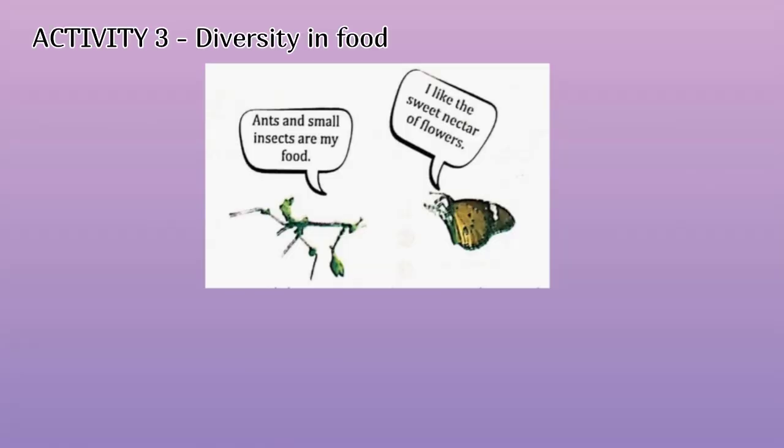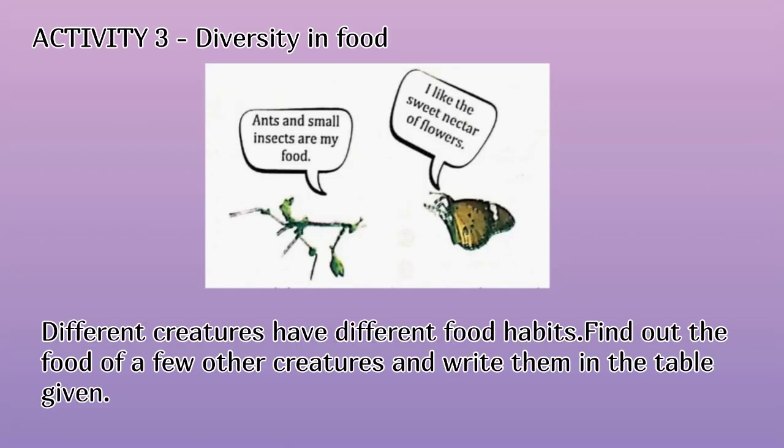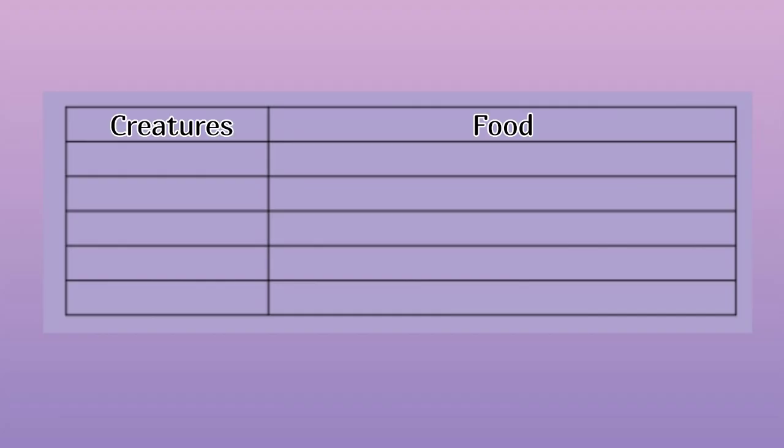Activity 3: Diversity in Food. A: Ants and small insects are my food. I like the sweet nectar of flowers. Different creatures have different food habits. Find out the food of a few other creatures and write them in the table given. Creatures: Cow, Elephant, Hen, Kingfisher, Frog.